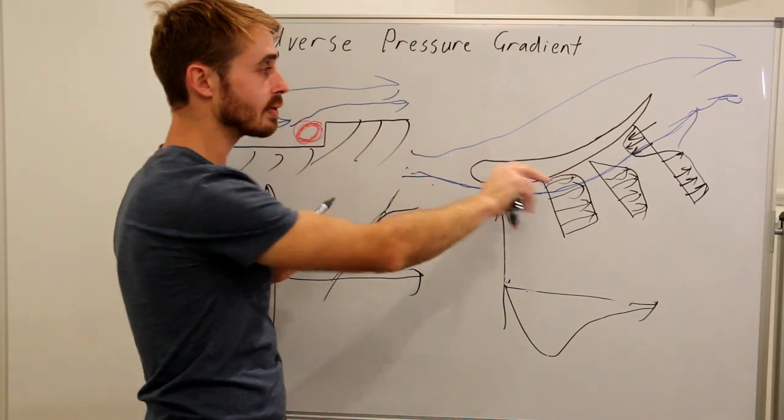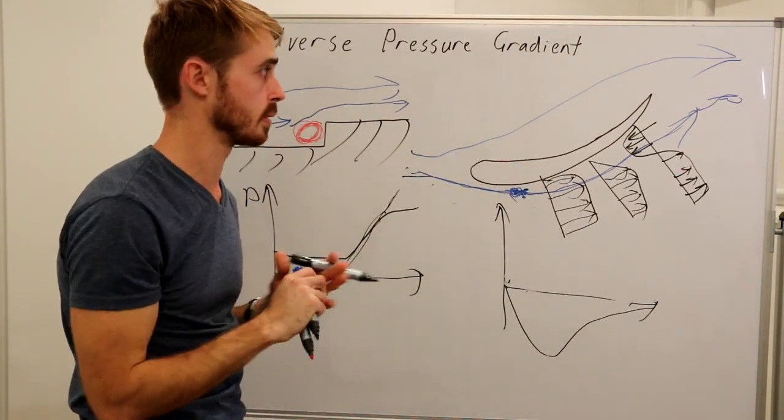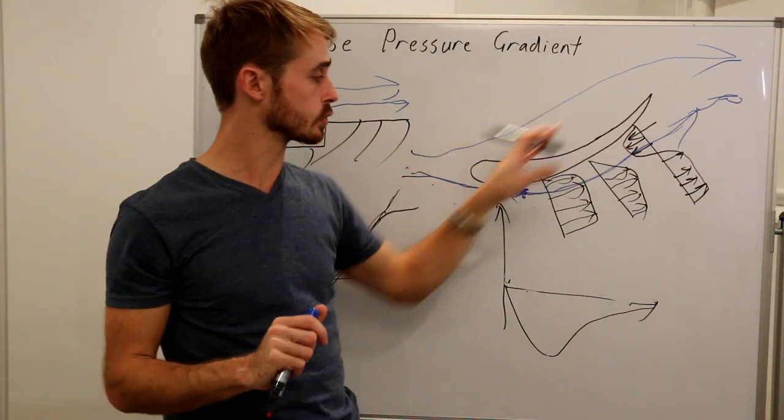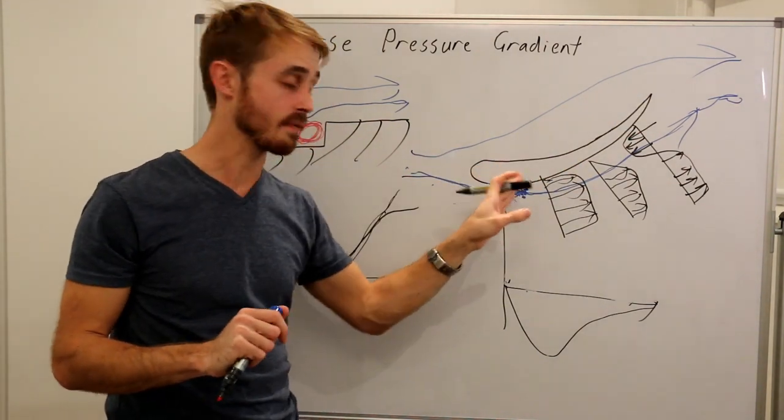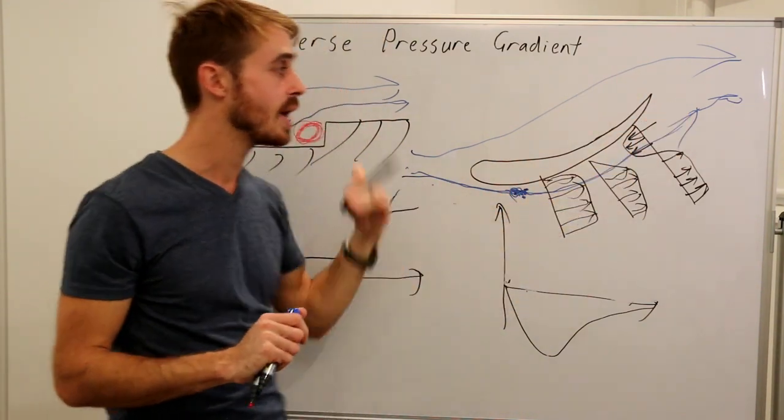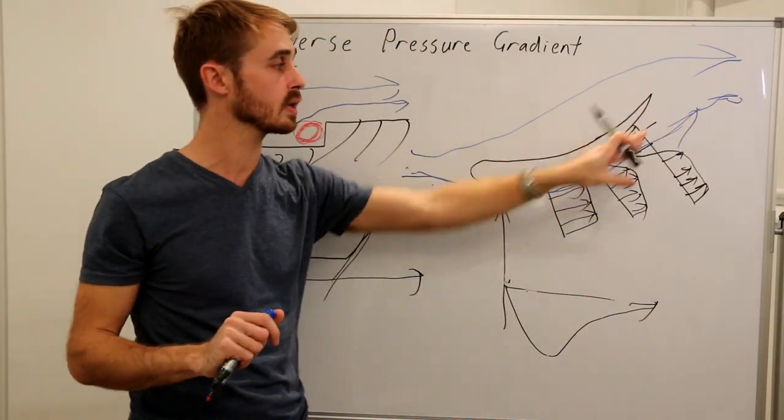And this is generally undesirable as a phenomenon. So to sum up, adverse pressure gradient is created by an obstacle in the flow or a flow structure which causes you to have a very low pressure peak at one point, then has to return to ambient pressure. And if it's too high on something like a wing, you'll end up with flow separation and stall.